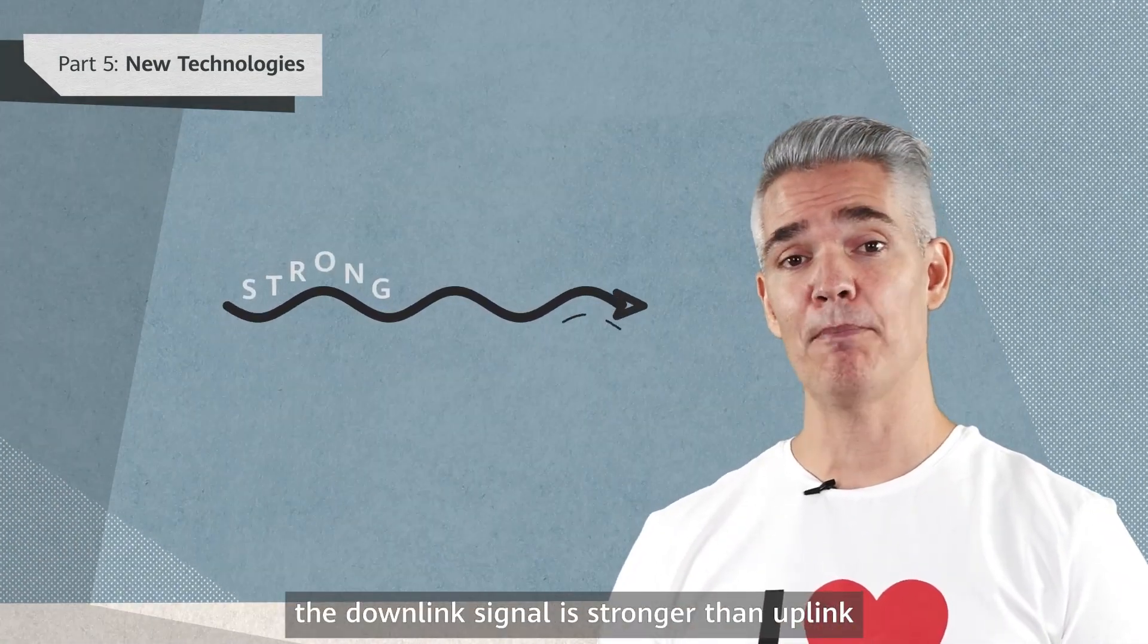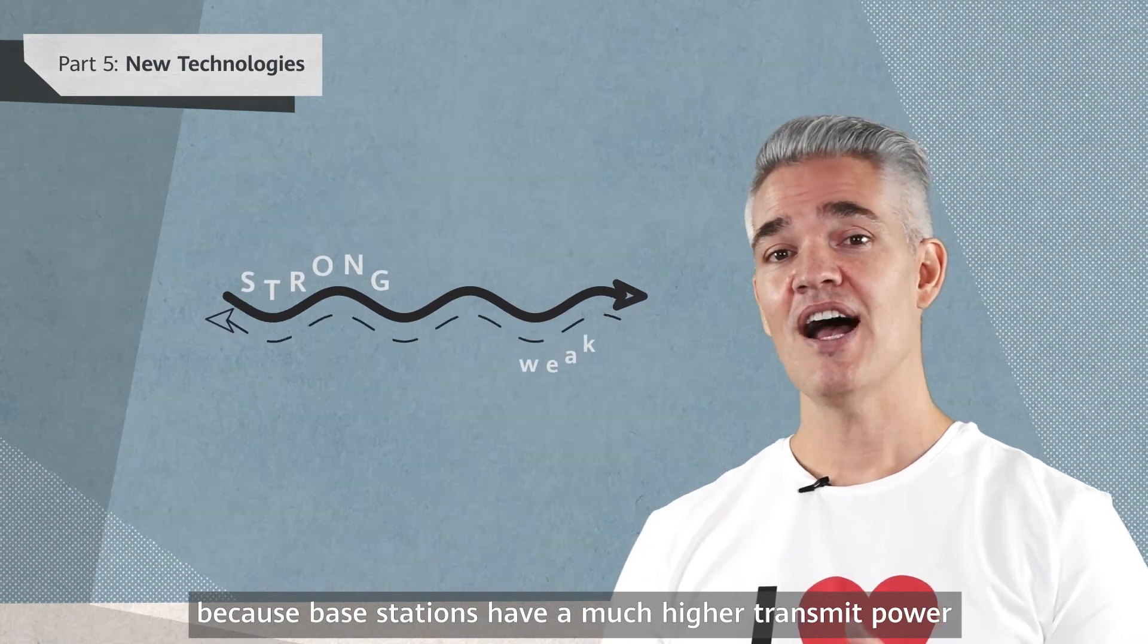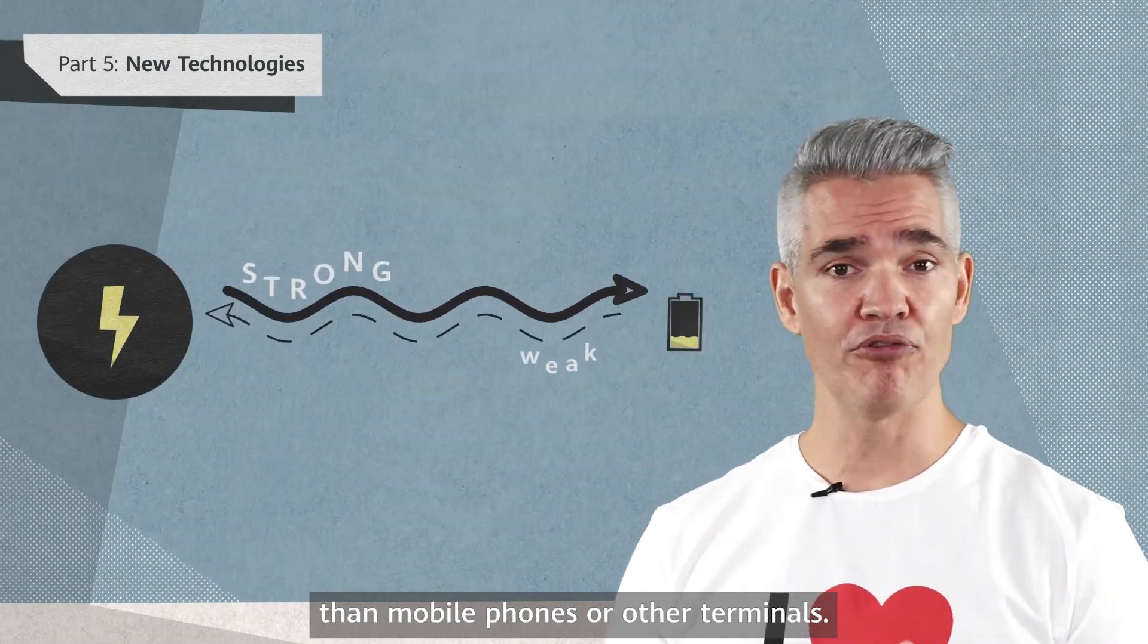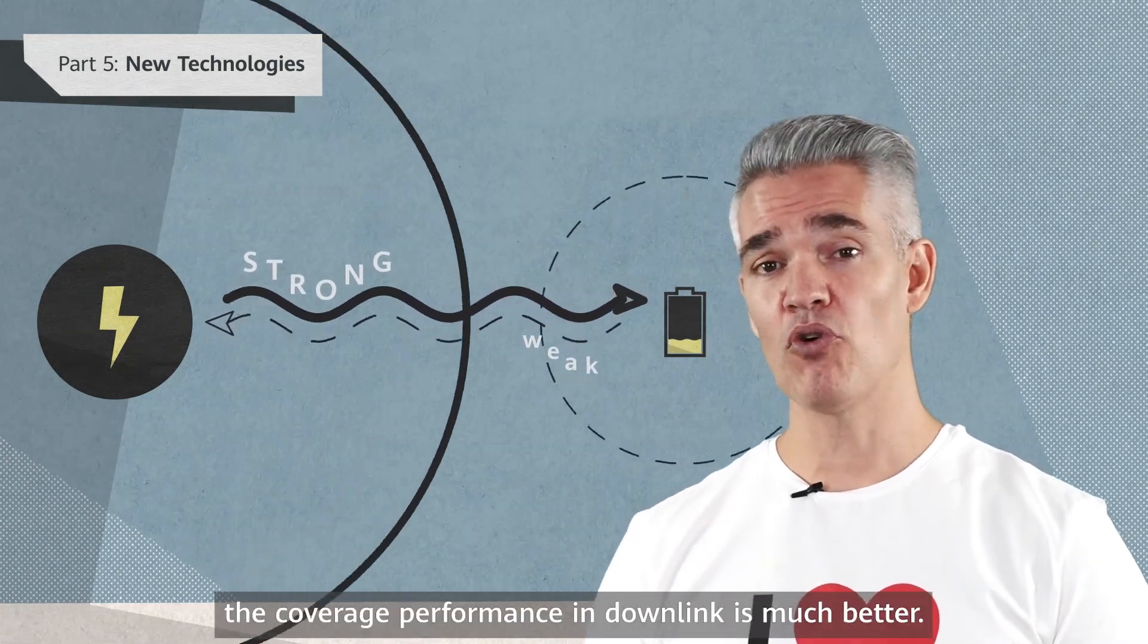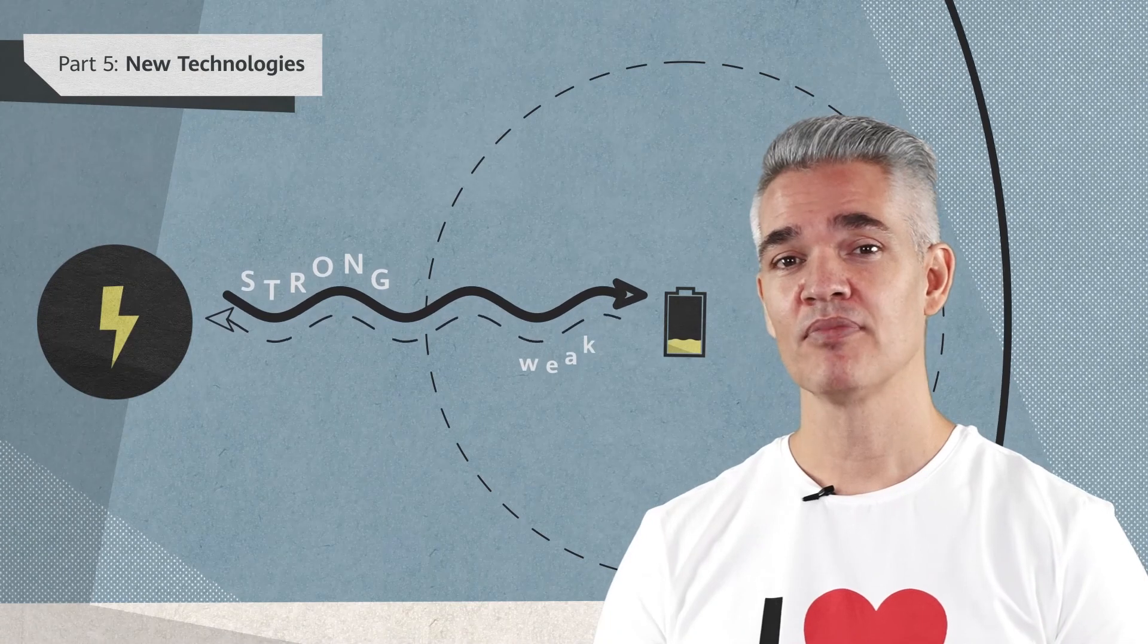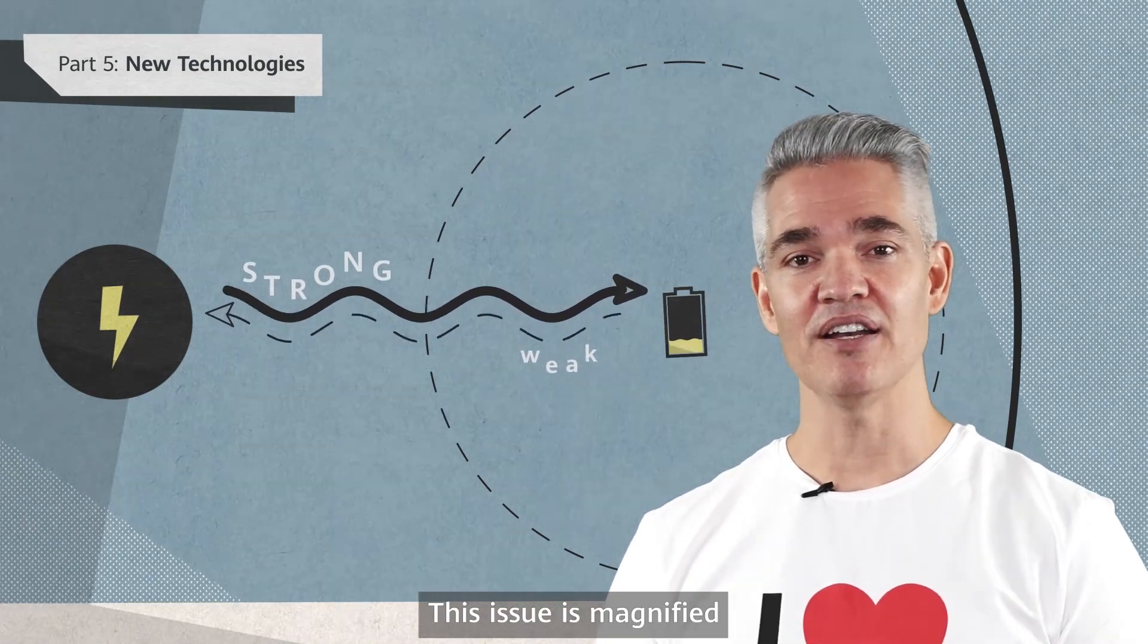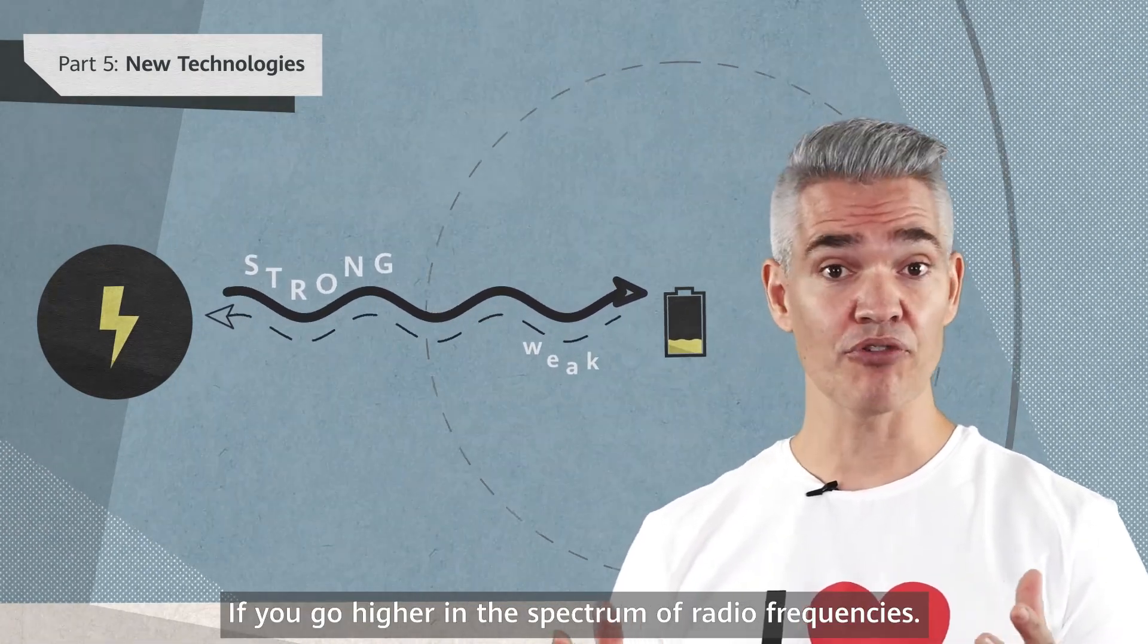In mobile transmissions, the downlink signal is stronger than the uplink, because base stations have a much higher transmit power than mobile phones or other terminals. As a result, the coverage performance in downlink is much better. This issue is magnified if you go higher in the spectrum of radio frequencies.